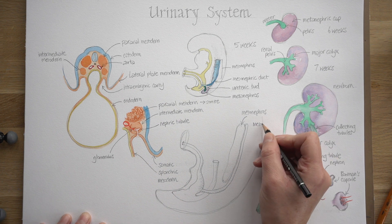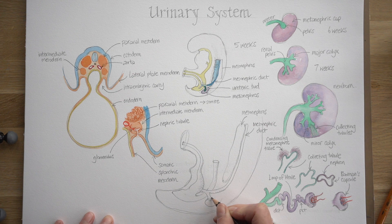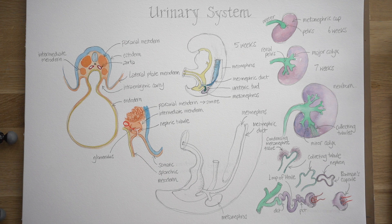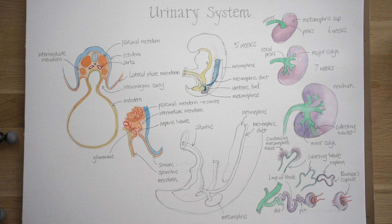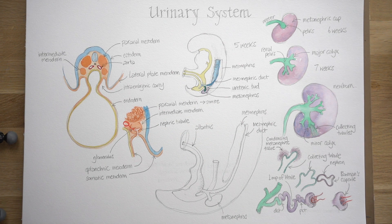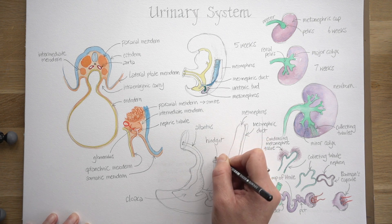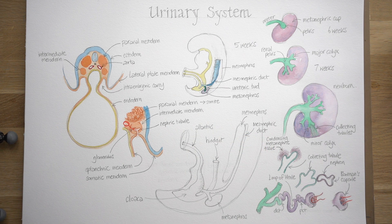You can see there the mesonephric duct and the ureteric bud; the mesonephric duct runs down and empties into that urogenital sinus. The urogenital sinus has a very narrow tube leading off it called the allantois, which extends into the connecting stalk. In egg-laying animals the allantois is quite important as a reservoir for waste, but it's not so important in us because we've got a placenta to take waste away from the fetus. The echo of the allantois is there in adult anatomy though — the urachus is almost like a cord of fibrous material that stretches from the bladder up to the umbilicus on the inside of the anterior abdominal wall.